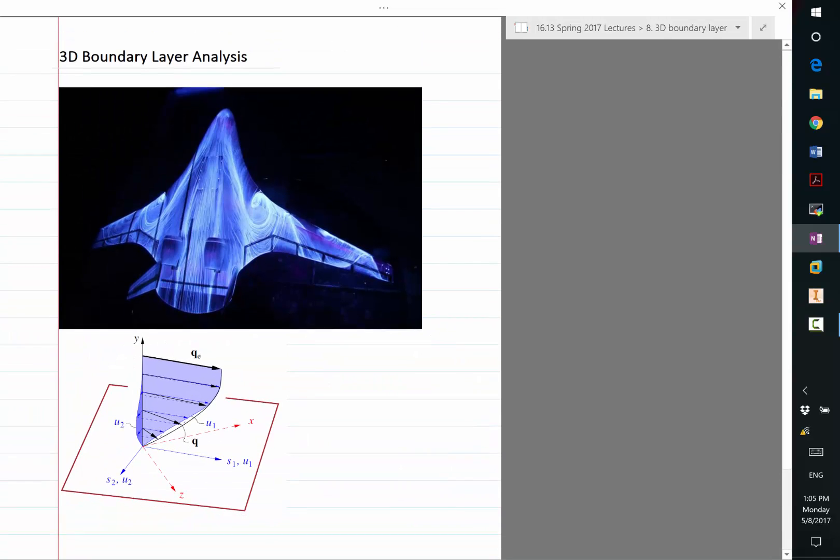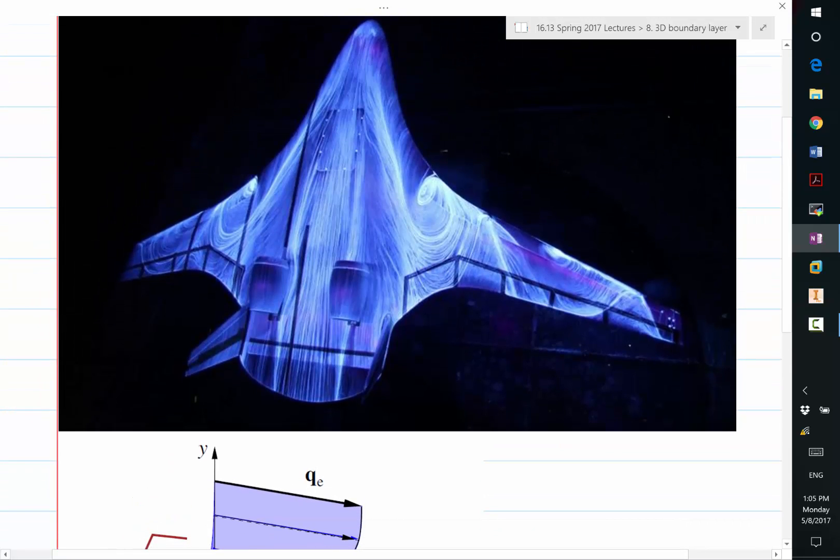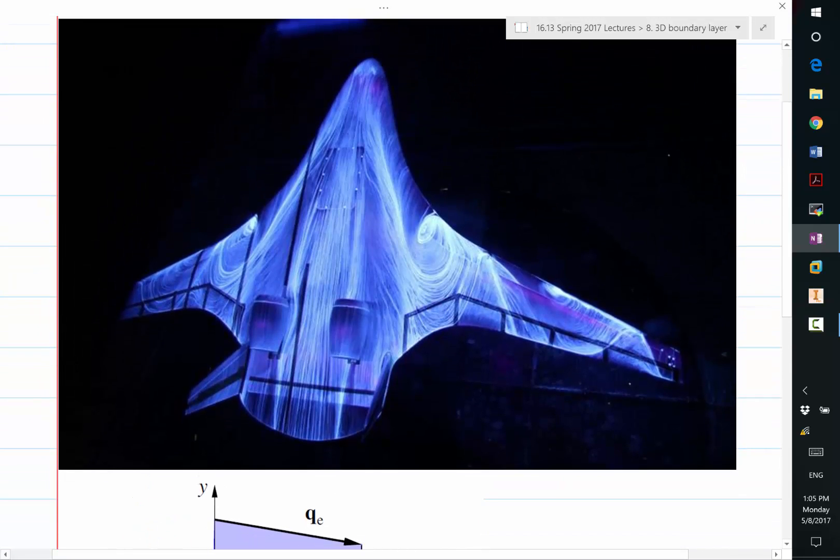So for real airplanes, there are remarkable three-dimensional effects. This is one of the pictures taken in a wind tunnel testing down in NASA Langley.